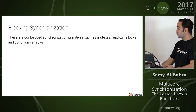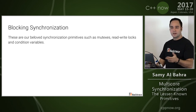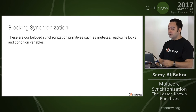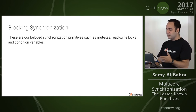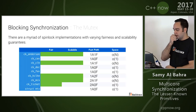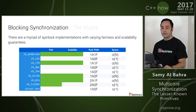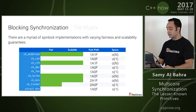Blocking synchronization primitives — these are what most of us are familiar with: mutexes, read-write locks, condition variables, etc. There have been a lot of advancements over the last 30 years plus in this area, and unfortunately we don't utilize them. There are a myriad of spin lock and mutex algorithms out there with varying fairness and scalability guarantees — it goes well beyond the simple mutex that we see today.